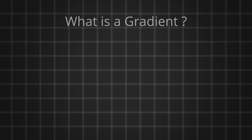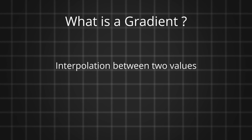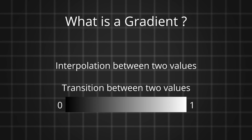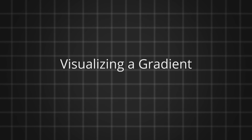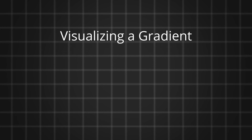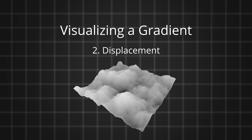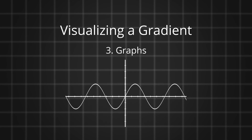Understanding gradients as graphs. In Blender's shading system, a gradient is an interpolation between two values — we can also call this a transition. There are three ways to visualize a gradient: one is using its intensity or brightness, another is using displacement, and the final way is using graphs.